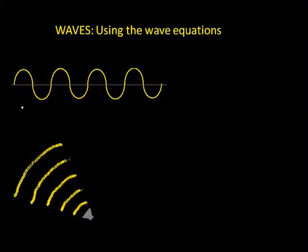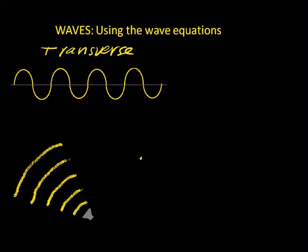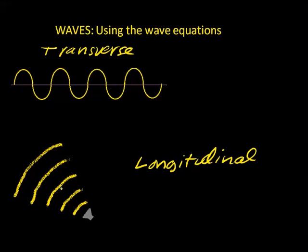Now, let's take a couple of minutes and talk about two very basic waveforms — transverse waves and longitudinal waves. You have to understand that any type of wave is caused by some form of an object vibrating back and forth, some regular, repeating, vibrating motion.